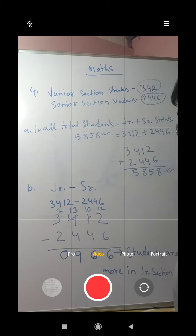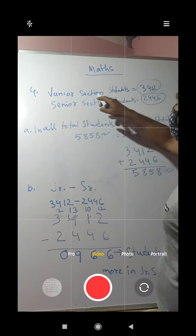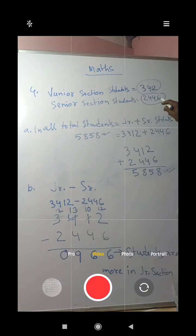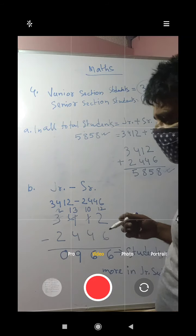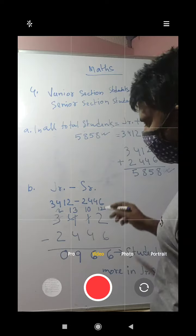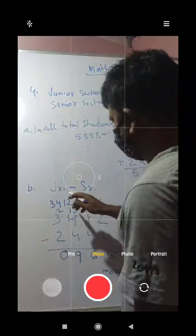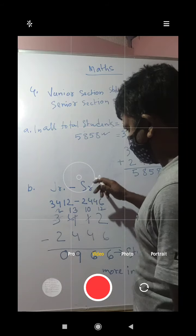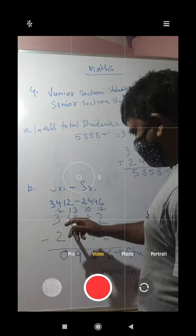Now for part b, which section has more students? Looking at the figures, junior section is 3412 and senior section is 2446. We can see that 3412 is more than 2446, so junior section has more students. To find how many more students are in the junior section, we use the subtraction method. We write junior section total and senior section total.